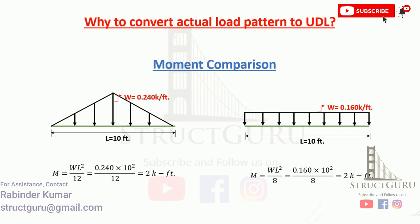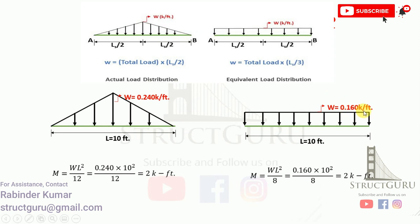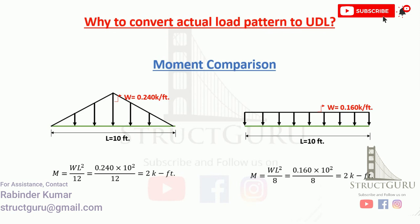The question is: why convert the actual load footprint to the uniformly distributed load footprint? These equations are based on moment comparison. For example, for a simply supported beam with triangular loading at a span of 10 feet, the maximum moment using W0 × LS / 12 gives 2 kip-ft. Similarly, if you convert the actual distribution to a UDL of 0.160 kip/ft, the maximum moment calculated as W0 × LS / 8 gives the same magnitude. The analysis of uniformly distributed load is a bit easier than the analysis of triangular loading.